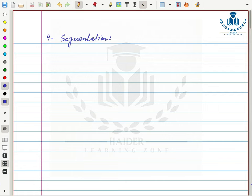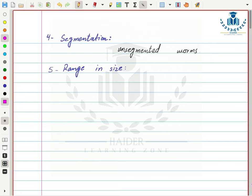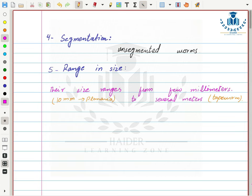Next is segmentation. Segmentation is a property in which the body is divided into several segments, but in Phylum Platyhelminthes there is no such segmentation — they are unsegmented worms. Regarding size range, Platyhelminthes include animals of several sizes: from a few millimeters in the case of planaria (around 10 mm) to several meters in the case of tapeworms.